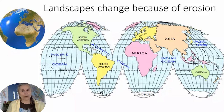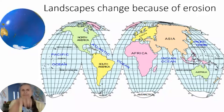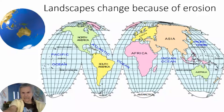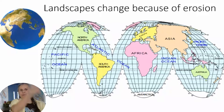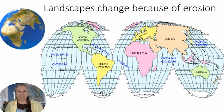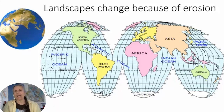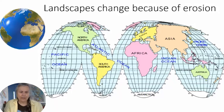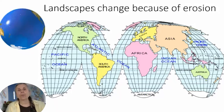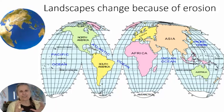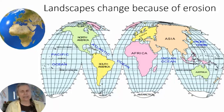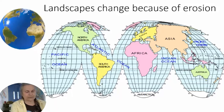Water does something really unique: it can evaporate and precipitate and go into what we call the water cycle. This water cycle does a lot of erosion, especially in hurricanes. On coastal areas, waves can hit the land and cause erosion. We'll also look at wind erosion in places like Africa and the deserts of California, and see what kind of effect it has over time.